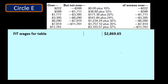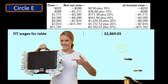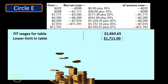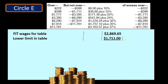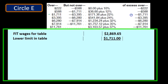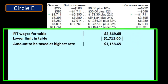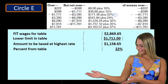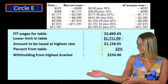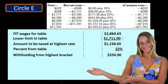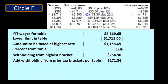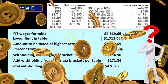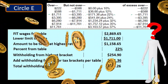So it looks like this: we take our taxable wages, subtract the lower limit from the table, and that gives us the amount to be taxed at the highest bracket of 22%. That amount times 22% gives us $254.90. Then we add the $171.36 given to us by the table — the tax on the lower portion — and adding those together gives us $426.26, which is our withholding amount.